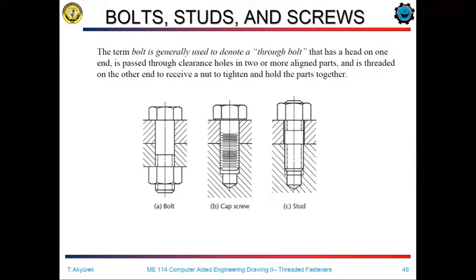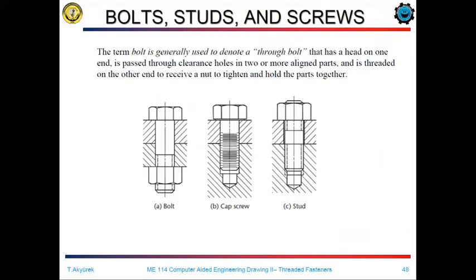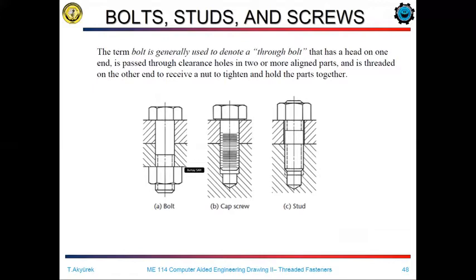On the left side, we have a bolt connection. In the bolt connection, the threaded part of the bolt is limited to some point. In the middle representation of this slide, we have a cap screw. The cap screw has much more threads when compared to the bolt connection. The difference between the bolt and the cap screw is the length of the threaded part, which is longer in the cap screw. On the right side, we have a stud machine element, and stud-type fasteners have no head on their elements.